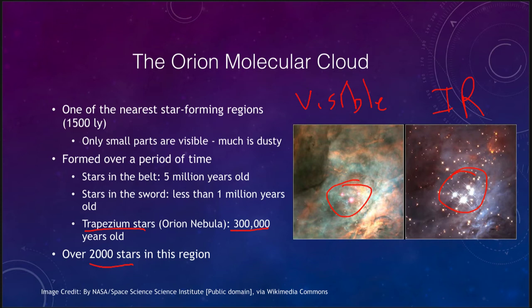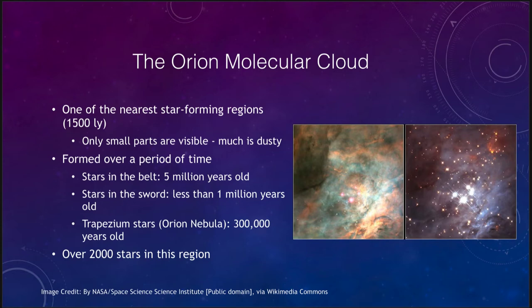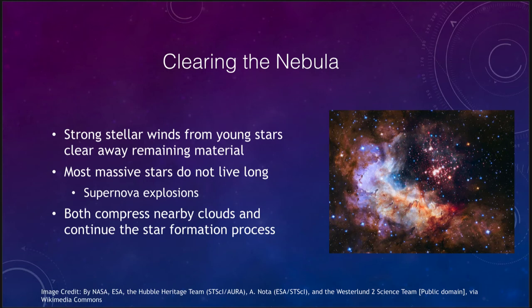It is not forming just these very bright stars but lots of others. This is one of the nearest star-forming regions in the Milky Way. How do we go about clearing that nebula? We use the stellar winds of material — as these young stars form, they give off a very strong stellar wind which pushes material away and clears out some of the major material.